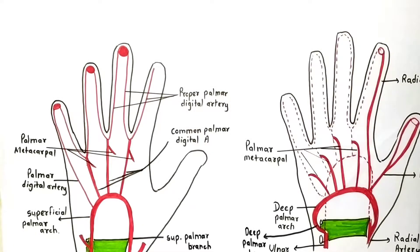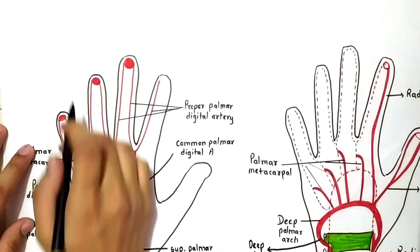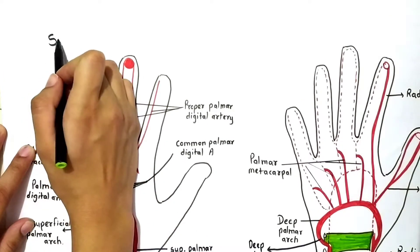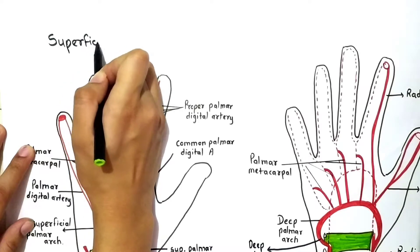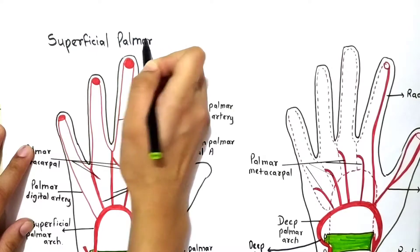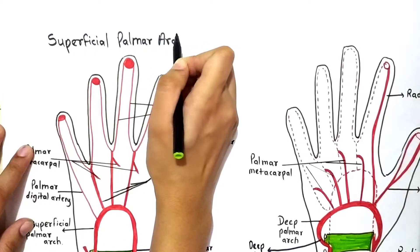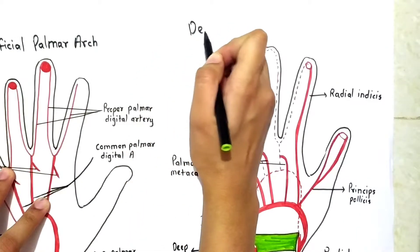Welcome to my YouTube channel. In the last video we completed all the arteries of the upper limb including the ulnar and radial artery. Now let us talk about the palmar arches — this one is the superficial palmar arch and this one is the deep palmar arch.